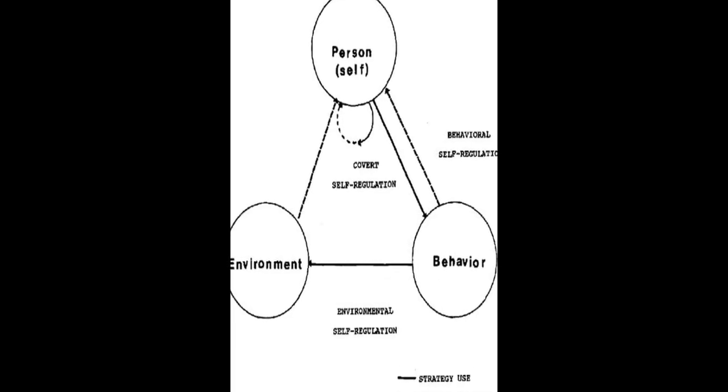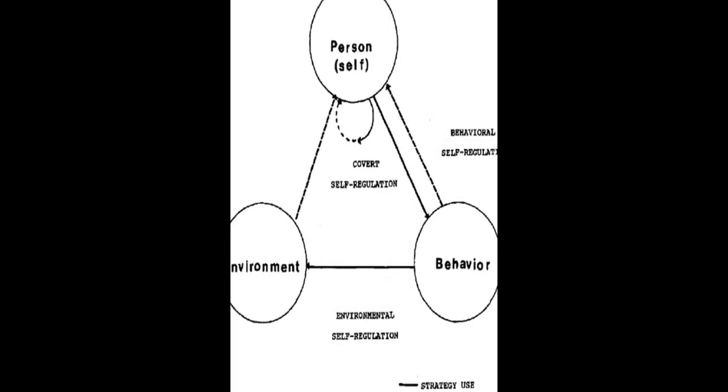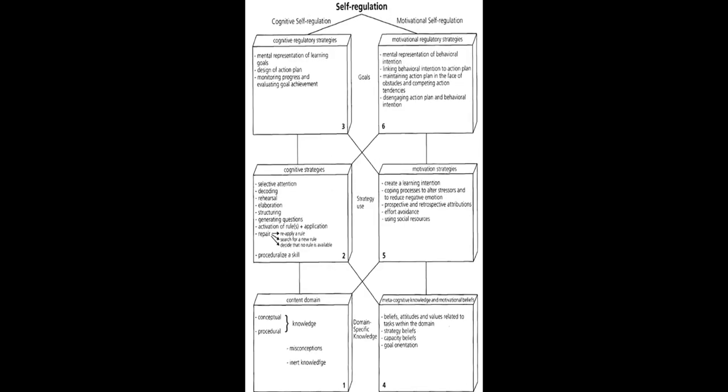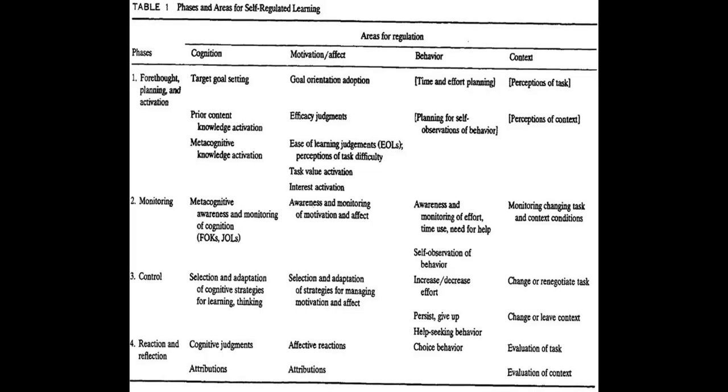The models are then compared in terms of phases and subprocesses, how they conceptualize metacognition, motivation, and emotion, top-down/bottom-up, automaticity, and context.